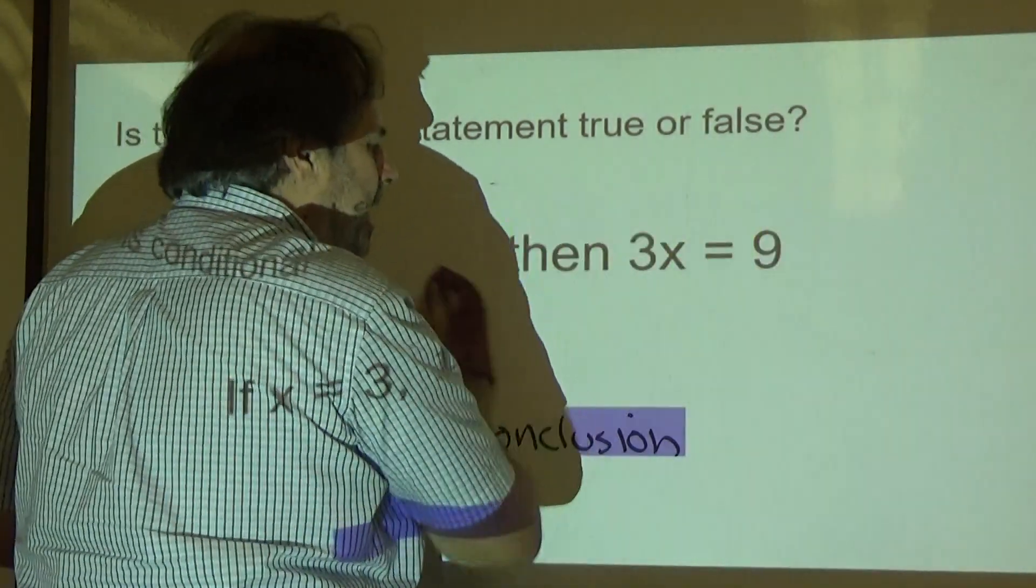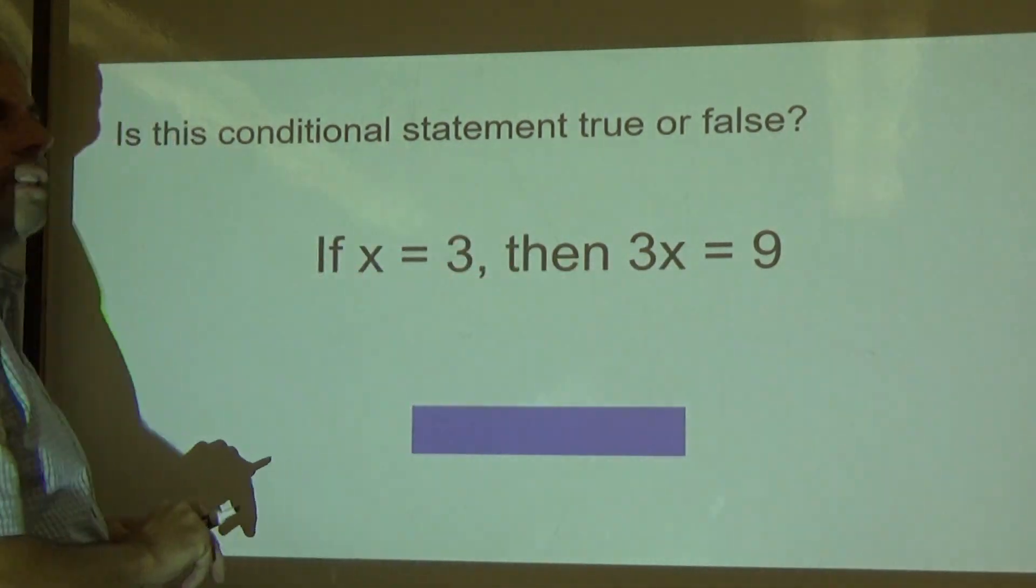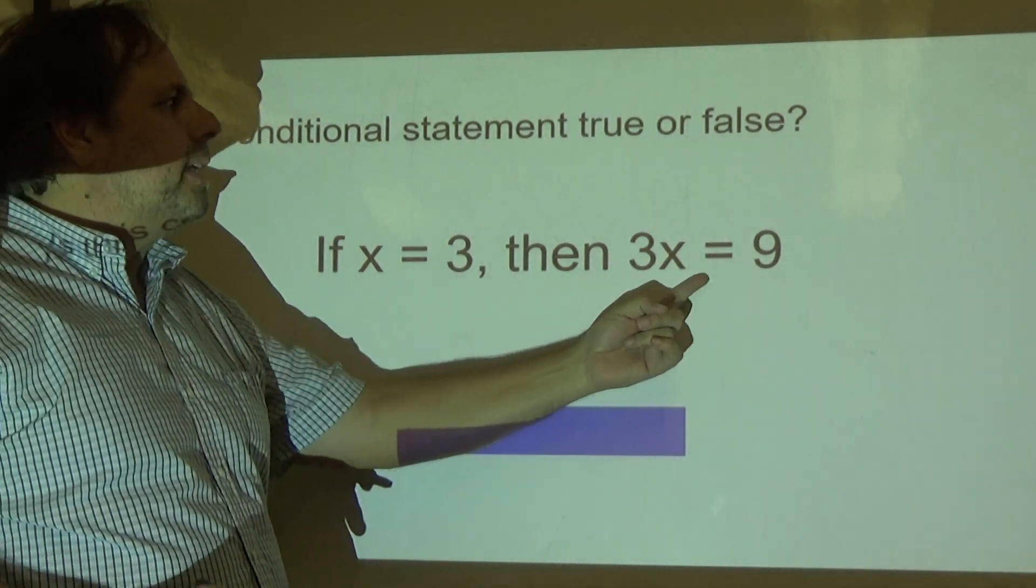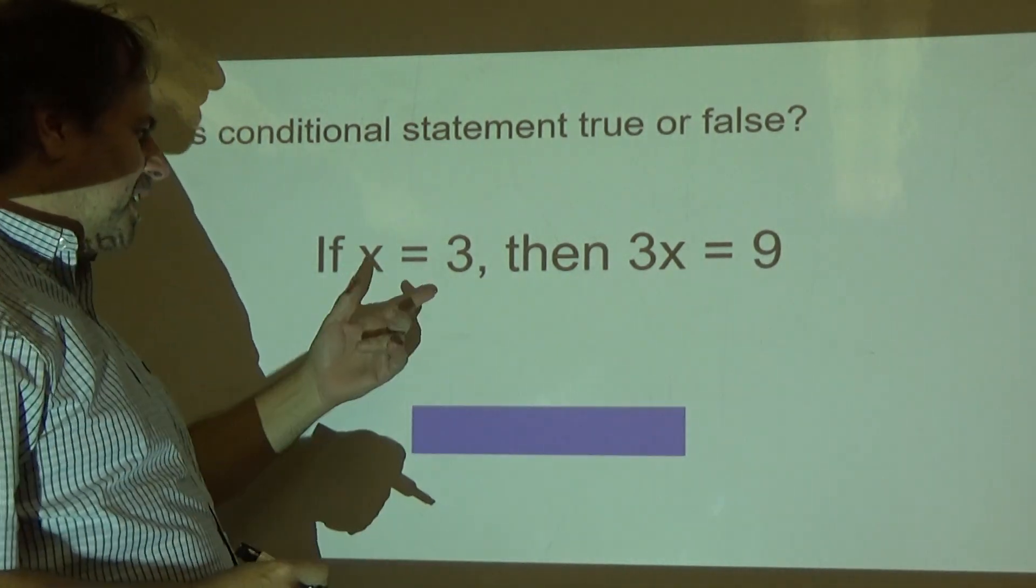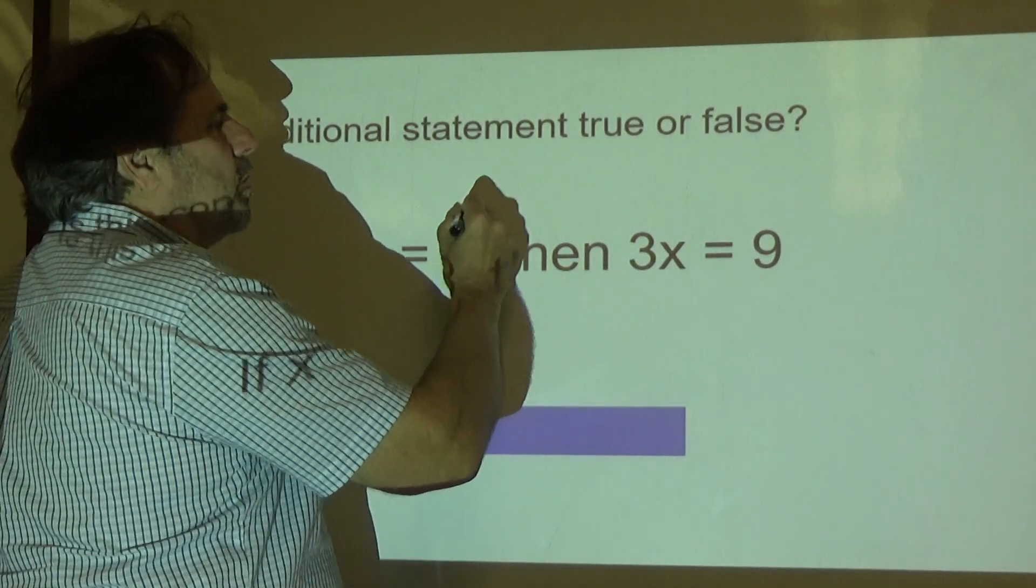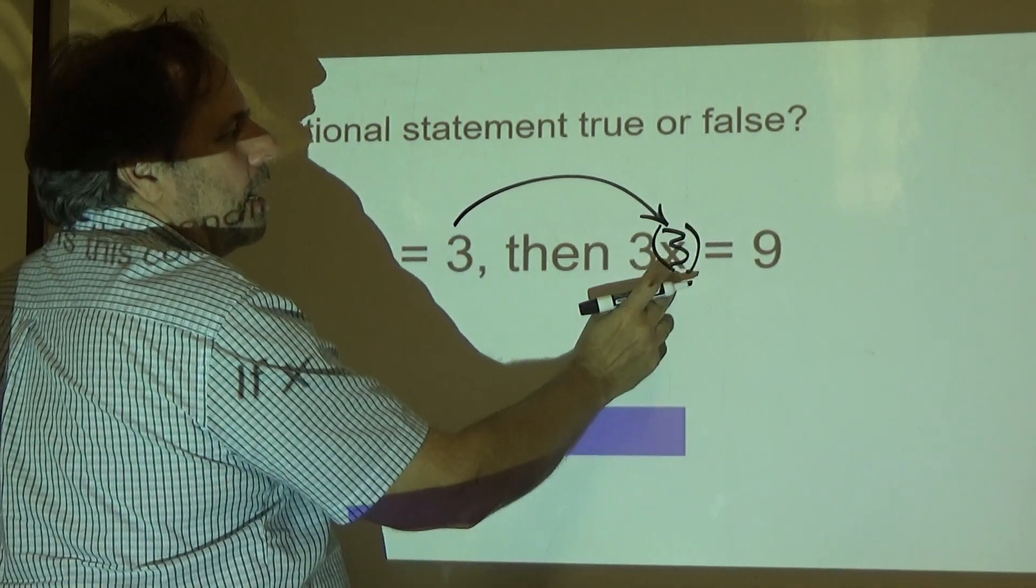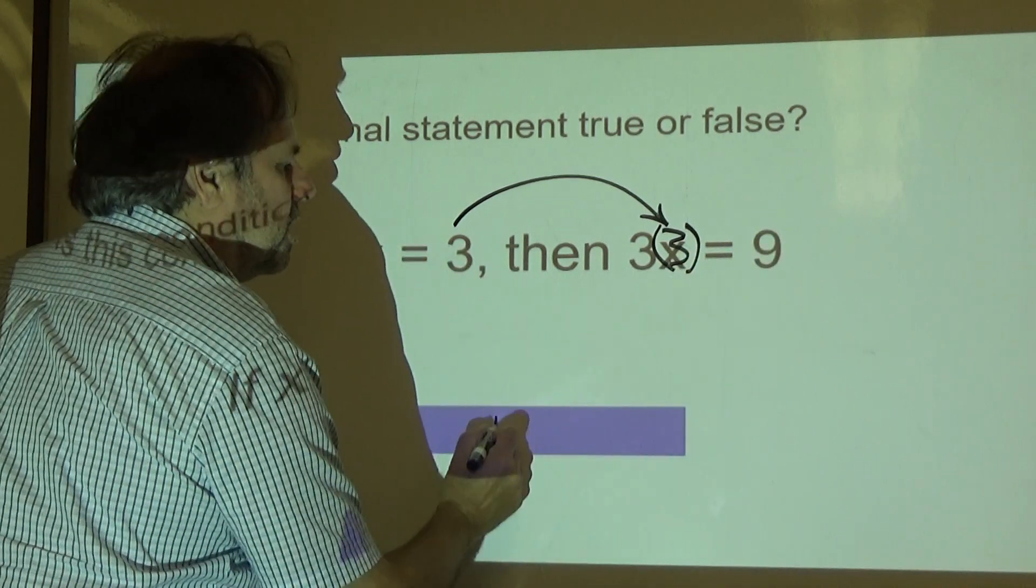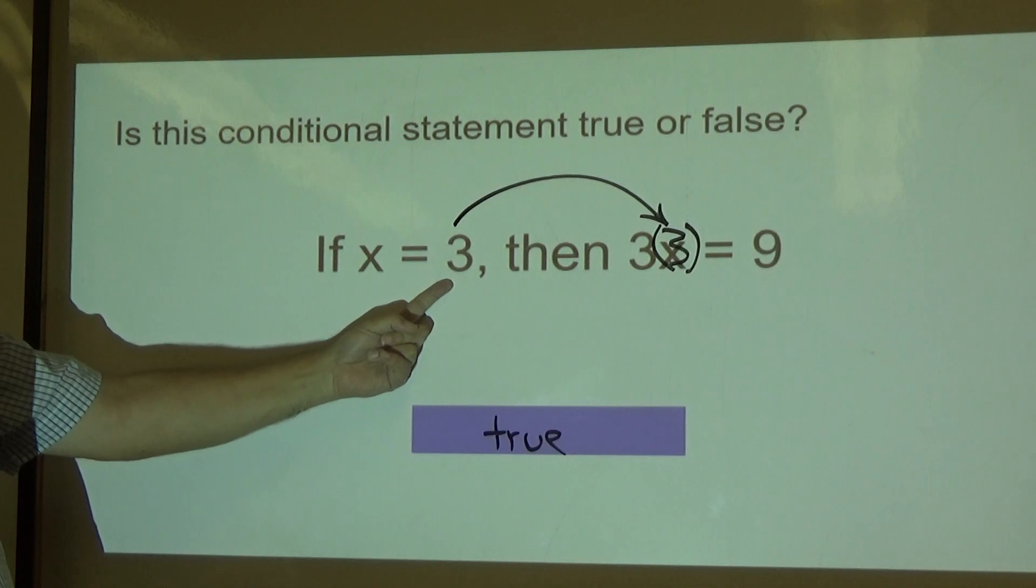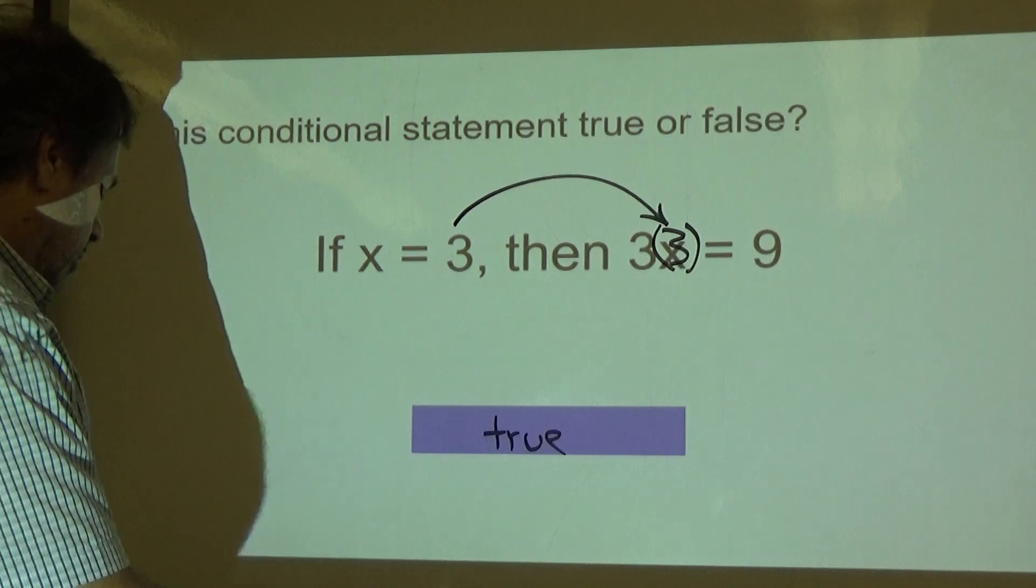Now then, it says is this statement true or false? We have to evaluate this statement and see if it's true or false. If x equals 3, then 3x equals 9. Is it true that if x is 3, then 3x is equal to 9? We'll use the substitution property to put 3 in for x. 3 times 3 equals 9, and this is true.